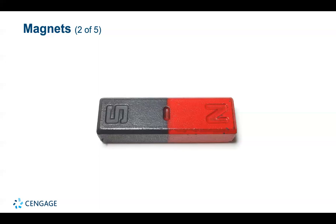There's one important difference between electrical forces and magnetic poles. Positive and negative electric charges can exist in isolation of each other, but north and south poles do not. No matter how many times a permanent magnet is cut, each piece always has a north pole and a south pole. There is some theoretical basis that magnetic monopoles exist in nature, and the attempt to detect them is currently an active experimental field.